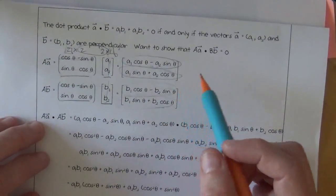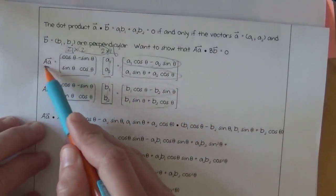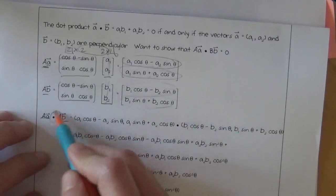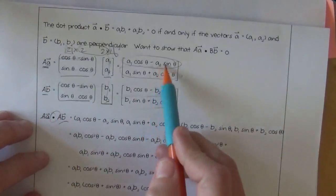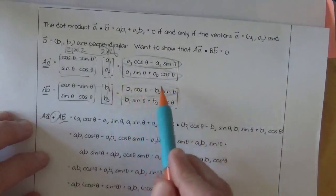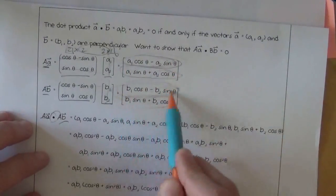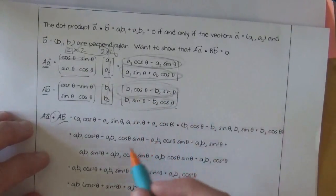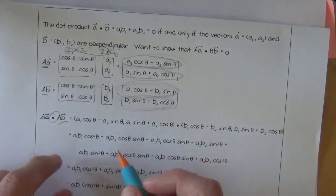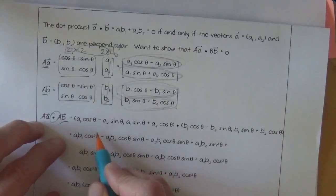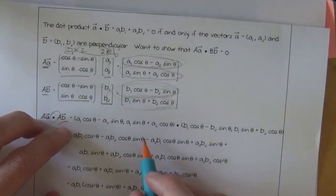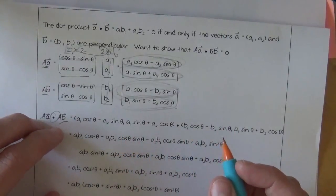And so now they're going to take these two guys, this AA and AB that we created, and they're going to dot them. And all that means is that they're going to multiply the A's together, or multiply the X values together and multiply the B's together and add them up.